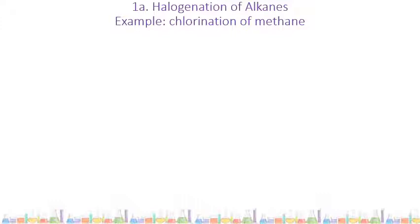The first example of substitution reactions we will look at is the halogenation of alkanes. This is where a hydrogen on an alkane is substituted for a halogen. The example we're going to go through is the chlorination of methane — adding chlorine to methane. But it's the exact same procedure no matter what two atoms you're given.